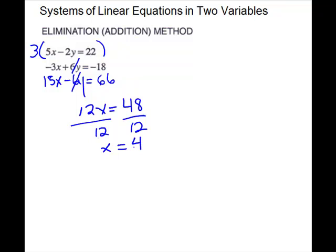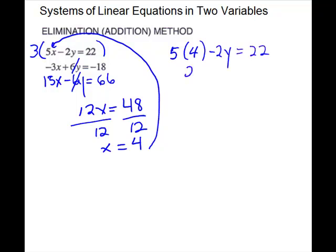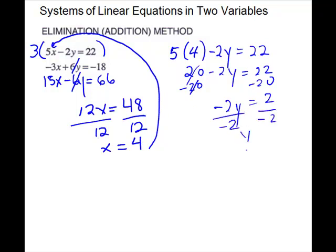Then I will substitute back into my first equation. So 5 times 4 minus 2y equals 22, which gives me 20 minus 2y equals 22. Subtract 20, giving me negative 2y equals 2. Divide by negative 2, and y equals negative 1. So my solution is the ordered pair 4, negative 1.